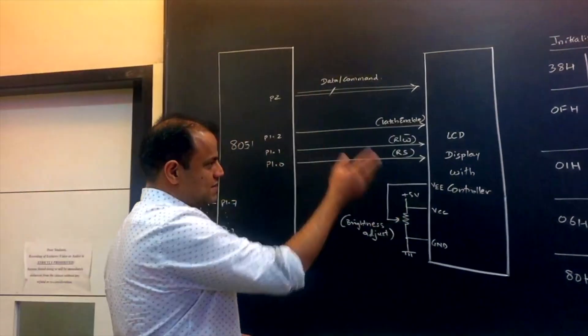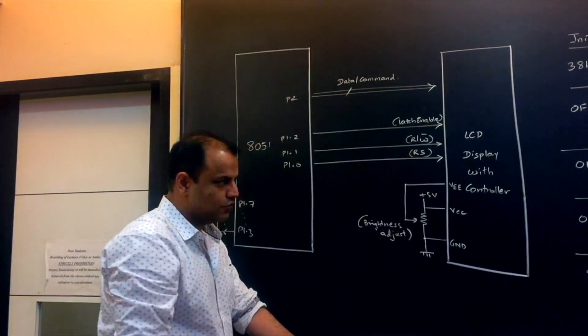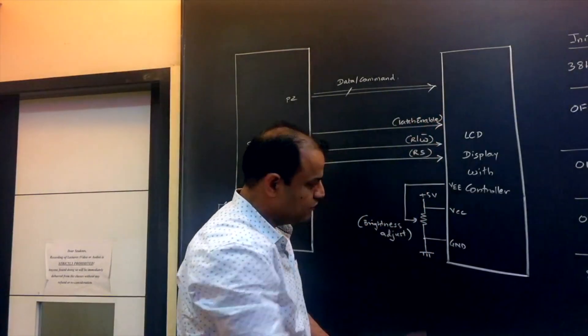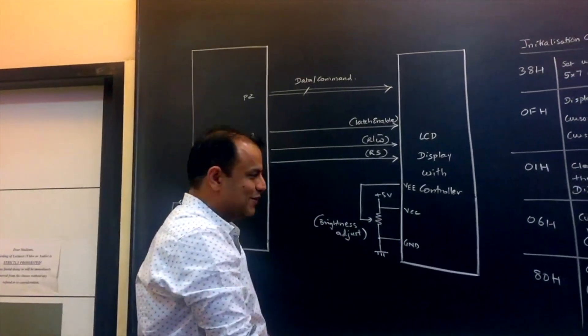The first thing, let's understand the interface. The interface is very simple. There are 14 pins on the LCD display. 1, 2, 3, 4, 5, 6, and 8 pins carrying data. So it's a 14 pin connector. Two pins are VCC and ground. I don't need to explain this to you.